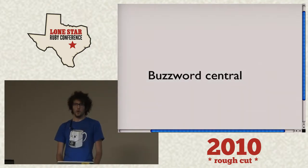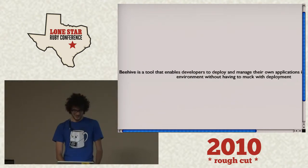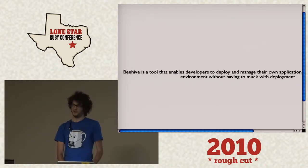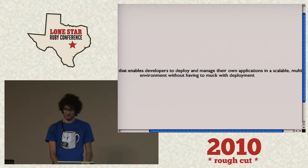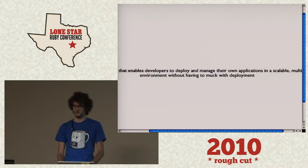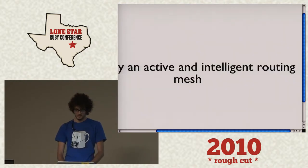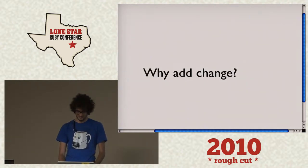So that was a whole bunch of buzzwords, am I right? So what actually is it? Beehive is a tool that enables developers to deploy and manage their own applications in a scalable, multi-tenant environment without having to deal with deployment. Basically, it's just an active intelligent routing mesh.